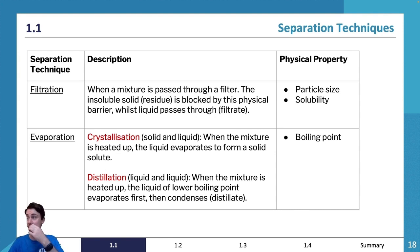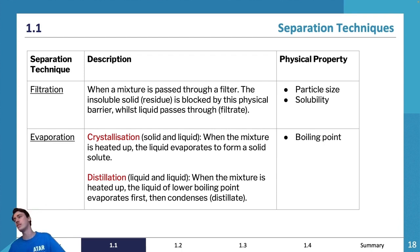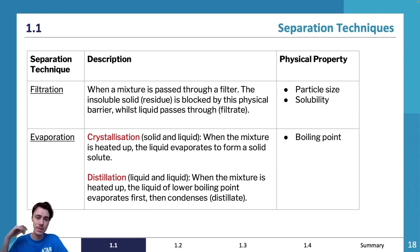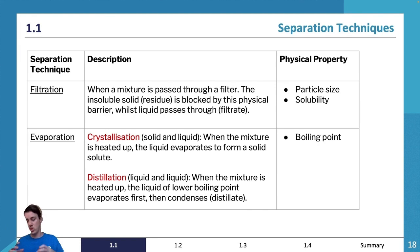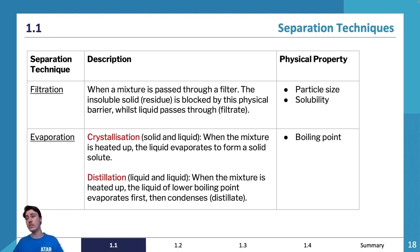Evaporation has two main types: crystallization and distillation. Crystallization is when you have solids dissolved in a liquid — when the mixture is heated, the liquid evaporates, leaving behind the solid solute as crystals. So you're left with just the crystals that were dissolved in the liquid, which is what you were trying to isolate.